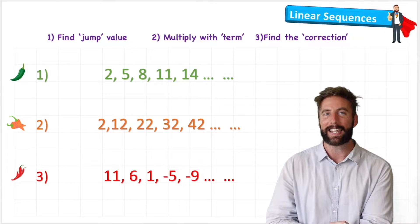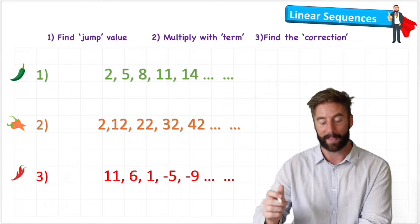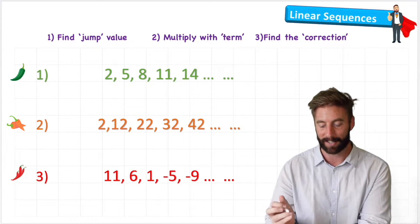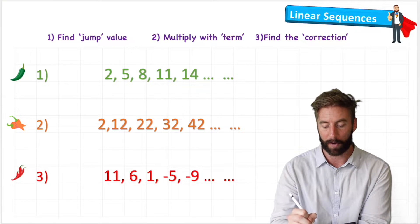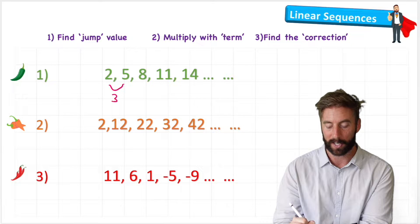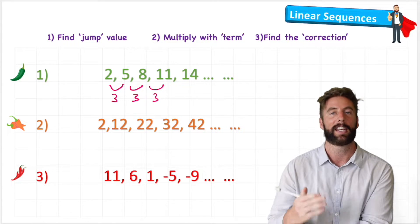But first, what is a linear sequence? Well, a linear sequence is any sequence of numbers where the gap or the jump between each of the numbers is consistent. So if we look at this first example, we can see that the gap between 2 and 5 is 3, the gap between 5 and 8 is 3, 8 and 11 is 3, etc.